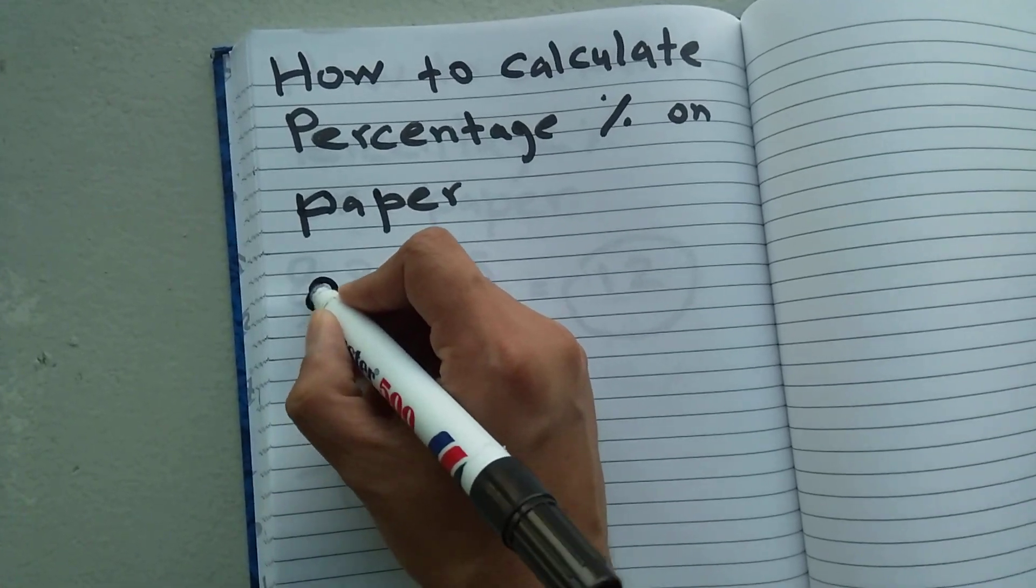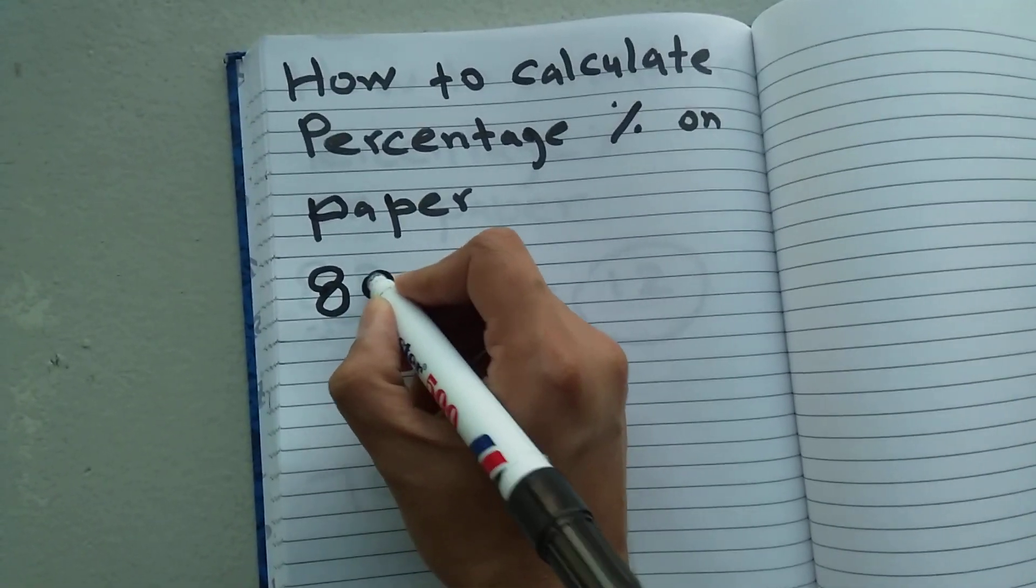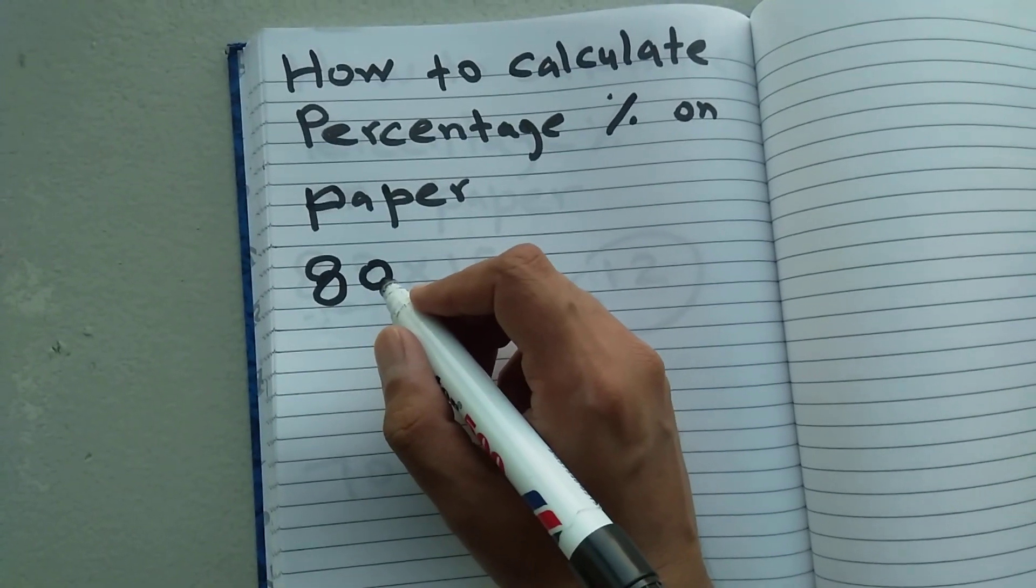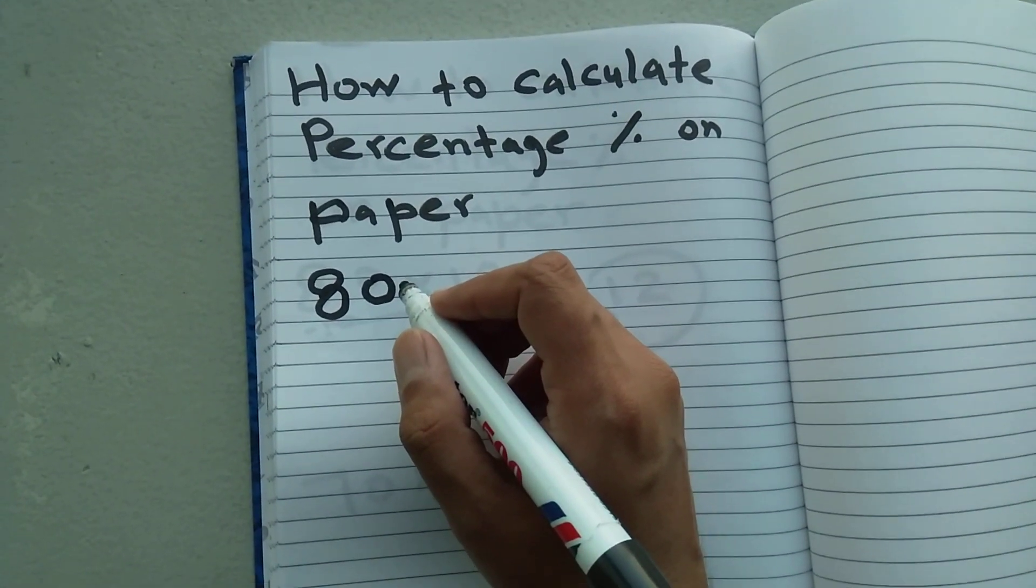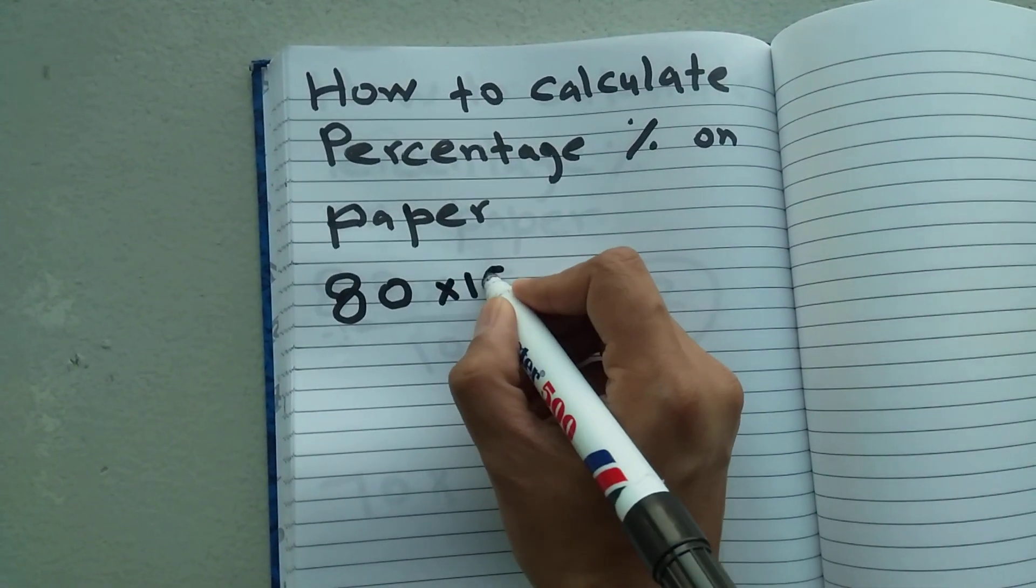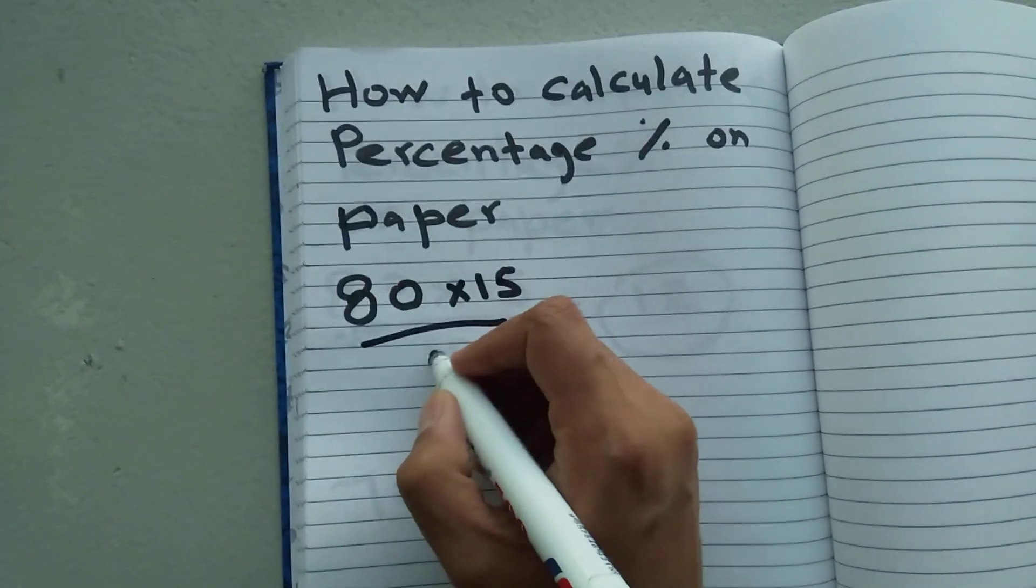You have a value of, let's say, 80, and you want to calculate how much will be the 15% of this value. So what you have to do: you have to multiply this 80 with 15, and then you have to divide it with 100.